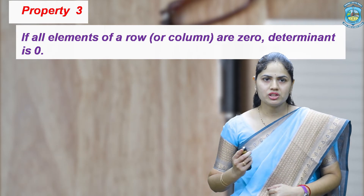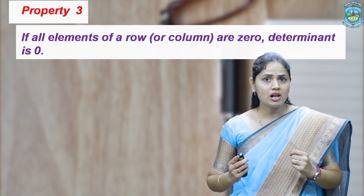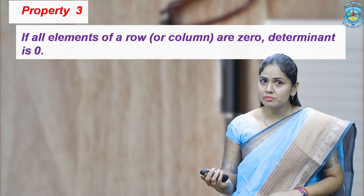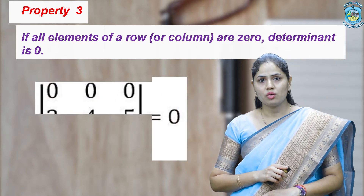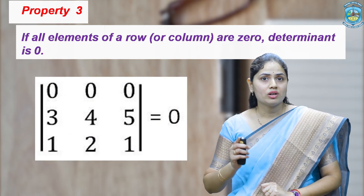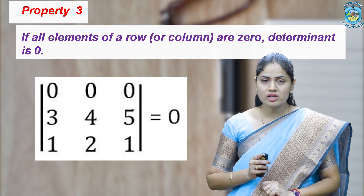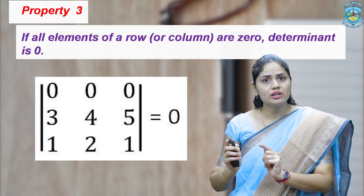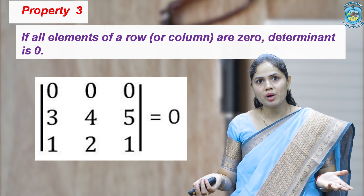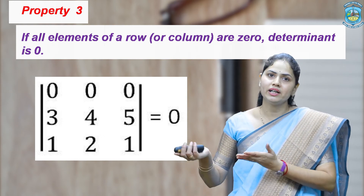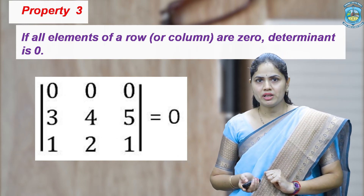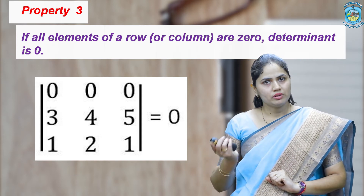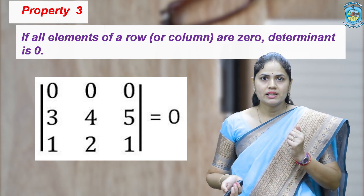The next property is: if all elements of a row or a column are 0, then the determinant is also 0. This is a very important property because in expansion, if any row or column is zero, there is no need for expansion — we simply write its value as 0. Here, the first row element is 0, so the value of the determinant is 0.